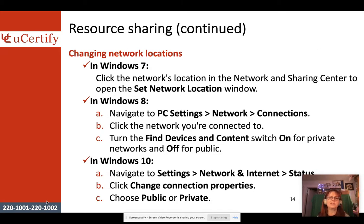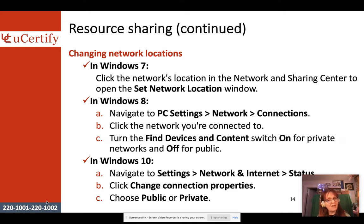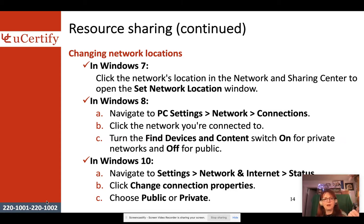To change network location in Windows 7, go to Network and Sharing Center to open the Set Network Locations window. In Windows 8, go to PC Settings > Network > Connections, click on the connected network, and toggle the 'Find devices and content' switch on for private or off for public. In Windows 10, go to Settings > Network & Internet > Status > Change Connection Properties and choose public or private.